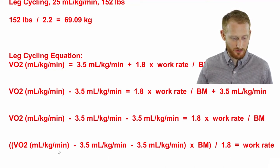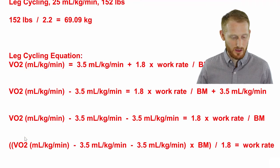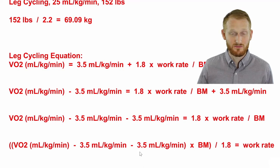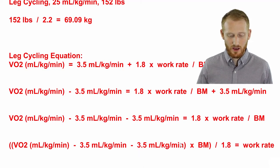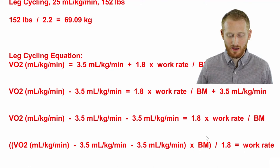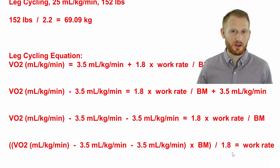Our final formula here is relative oxygen consumption minus 3.5 minus another 3.5, and you're going to want to do that all first, and then multiply that by the body mass and divide it by 1.8.